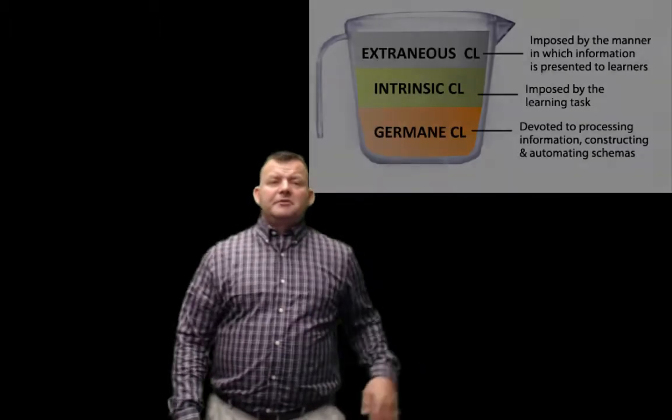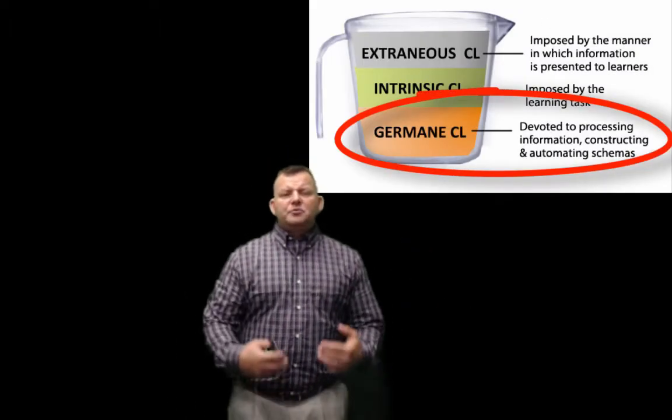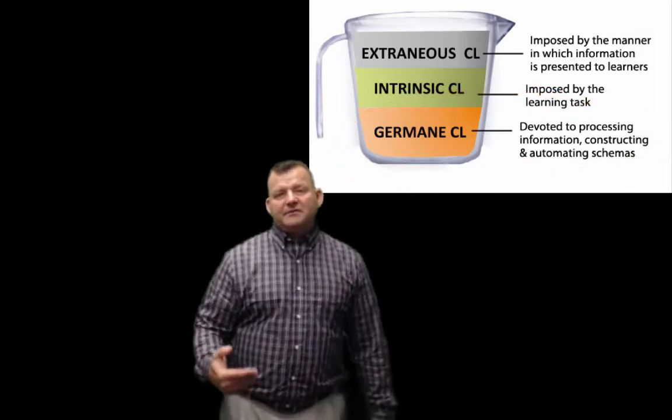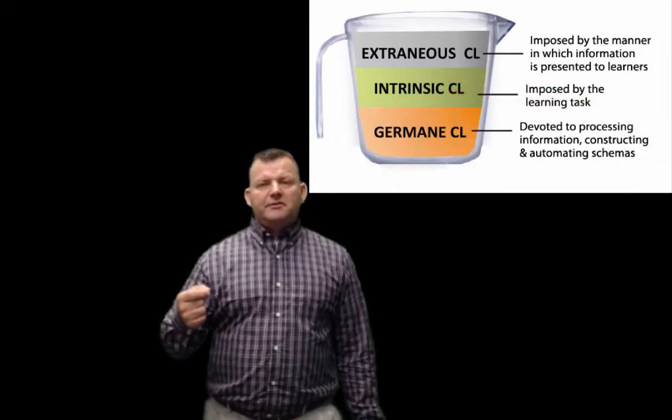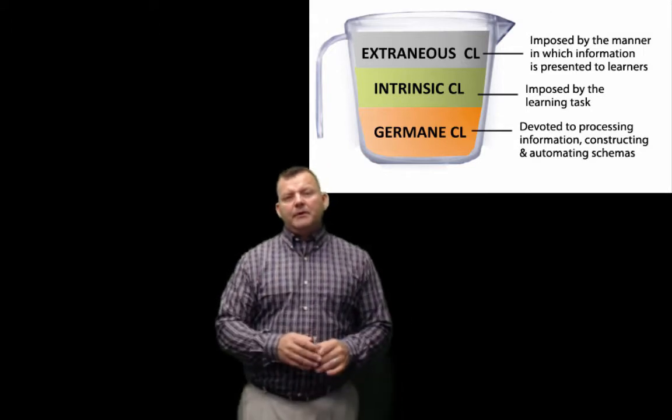The third type is germane cognitive load — it's the effective one. It is the positive cognitive load dealing with someone who is learning and processing information from their working memory into long-term memory. Germane cognitive load is what we want to have, and it's essentially the intrinsic load minus the extraneous load — that effective, productive amount.